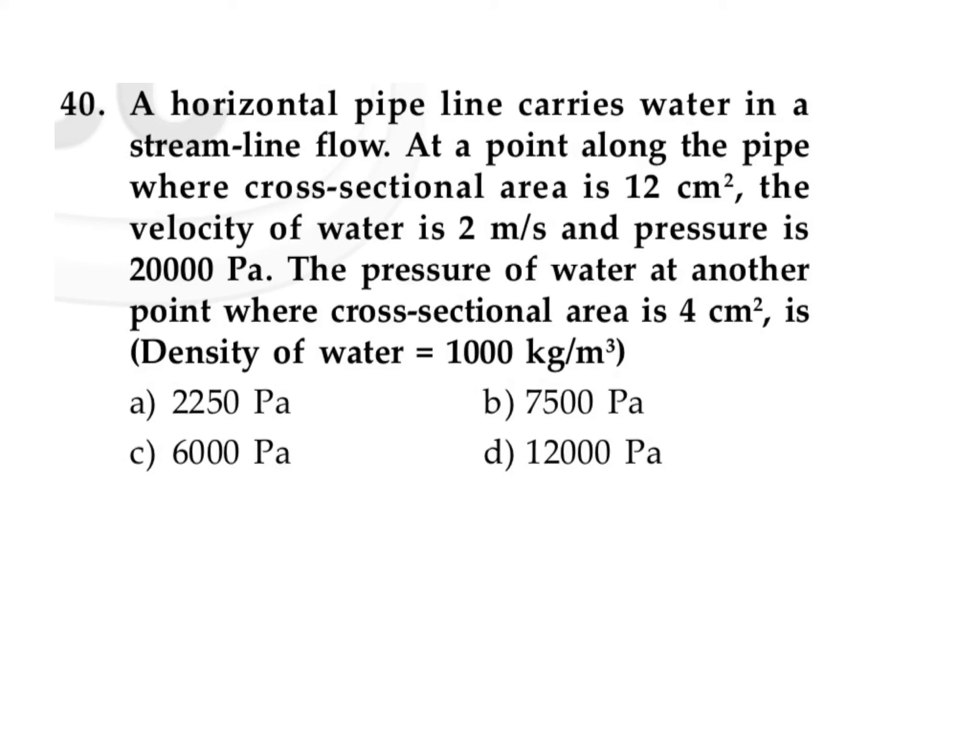A horizontal pipeline carries water in a streamlined flow. At a point along the pipe where the cross-sectional area is 12 centimeter square, the velocity of water is 2 meter per second and pressure is 2000 Pascal. We need to find the pressure of water at another point where the cross-sectional area is 4 centimeter square.